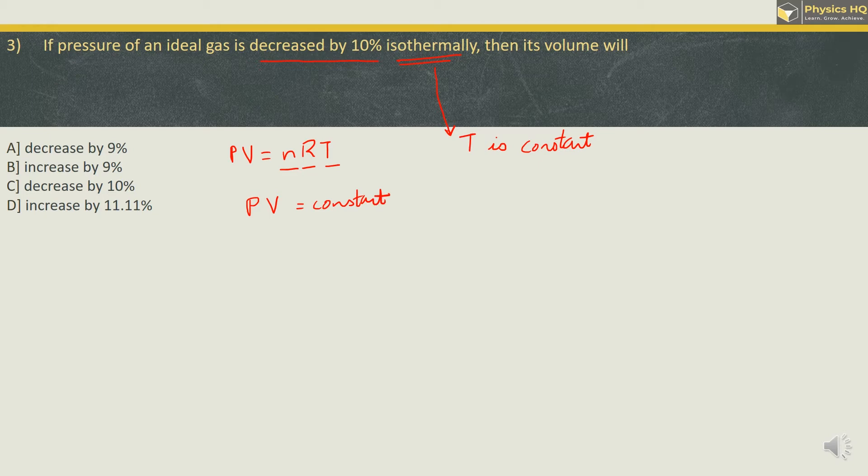Now, if by chance pressure increases to keep the product constant, the volume will go down so that the final product is again the same number. Likewise, if pressure will decrease, the volume has to go up so that the product remain constant. So in our case, in this question, there is a decrease in pressure. So if pressure will decrease, the volume has to increase. So we got two options matching with us of increase.